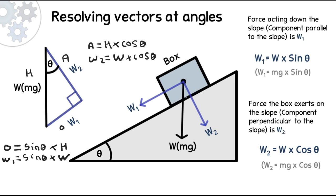One last thing: because this box is in equilibrium, there are forces balancing W1 and W2. The force balancing W2 is the reaction force — the force the slope exerts on the box, or the support force — and it equals W × cos(θ). The force balancing W1, the force acting down the slope, is friction. So friction F equals W1, and the reaction force equals W2. In an exam question asking for friction or the reaction force, those are your values.